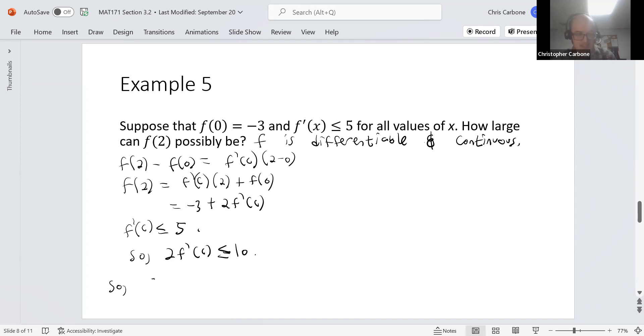This means that f(2) = -3 + 2f'(c). This has to be less than or equal to -3 + 10, which means a value of 7.